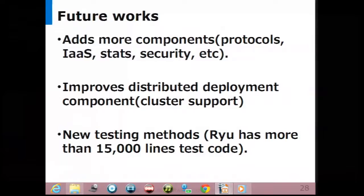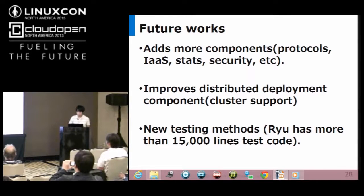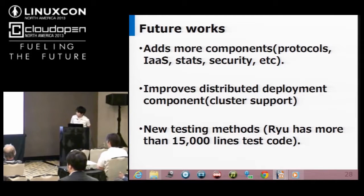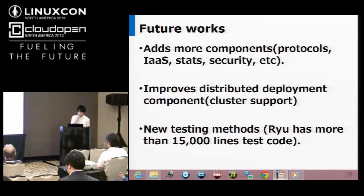These items are our future works. First, to help Ryu developers and users, we will add more components — for example, more existing protocols. And we would like to integrate other components such as CloudStack and network applications. Second, we are going to enhance Ryu controller performance and high availability. To achieve this, we will improve distributed deployment components. Finally, we have already tested Ryu heavily for production use. We have more than 15,000 lines of test code — this is bigger than the core code lines. To keep production quality, we'd like to introduce new testing methods.